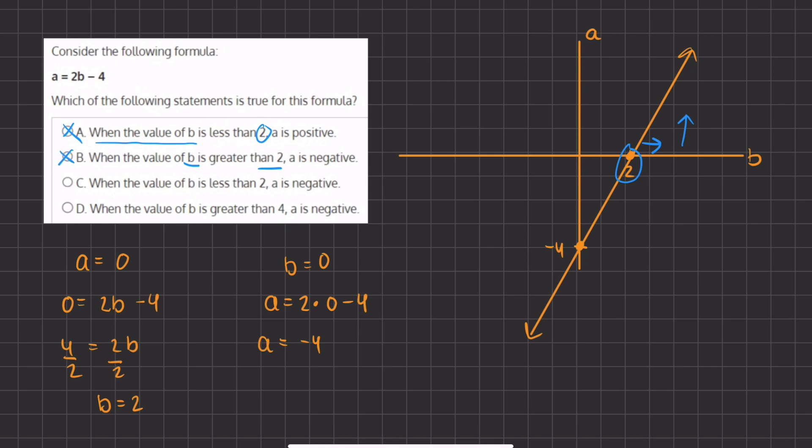c states, when the value of b is less than 2, so this is the other direction, going this way, then a is negative. Well, this is true because once we cross to the left-hand side of 2, all the a values become negative. And therefore, c will be the correct answer.